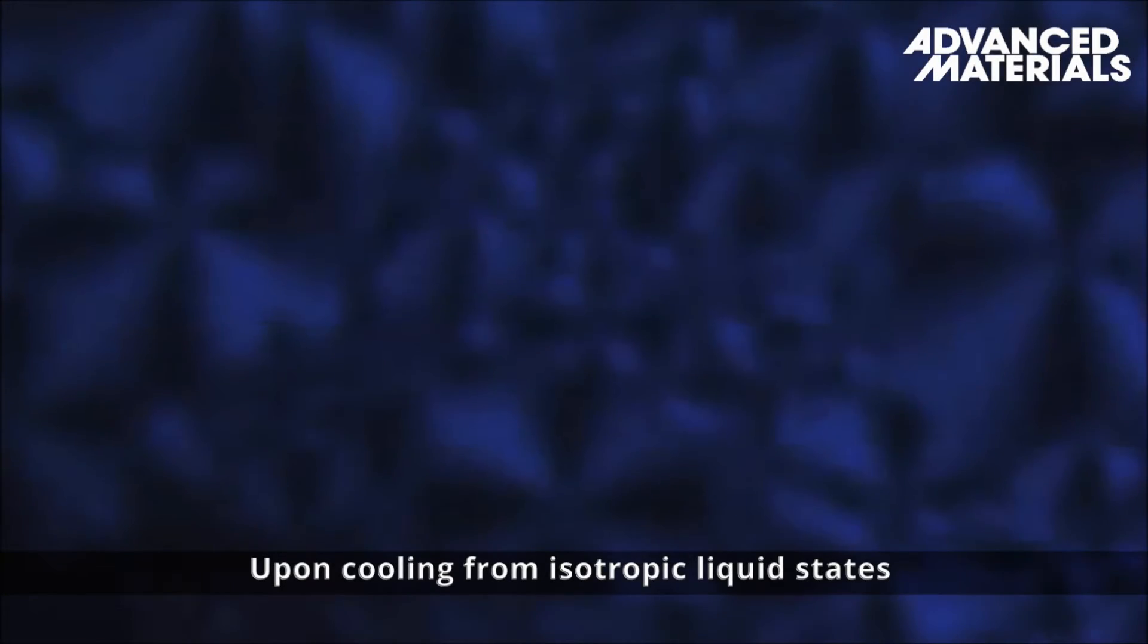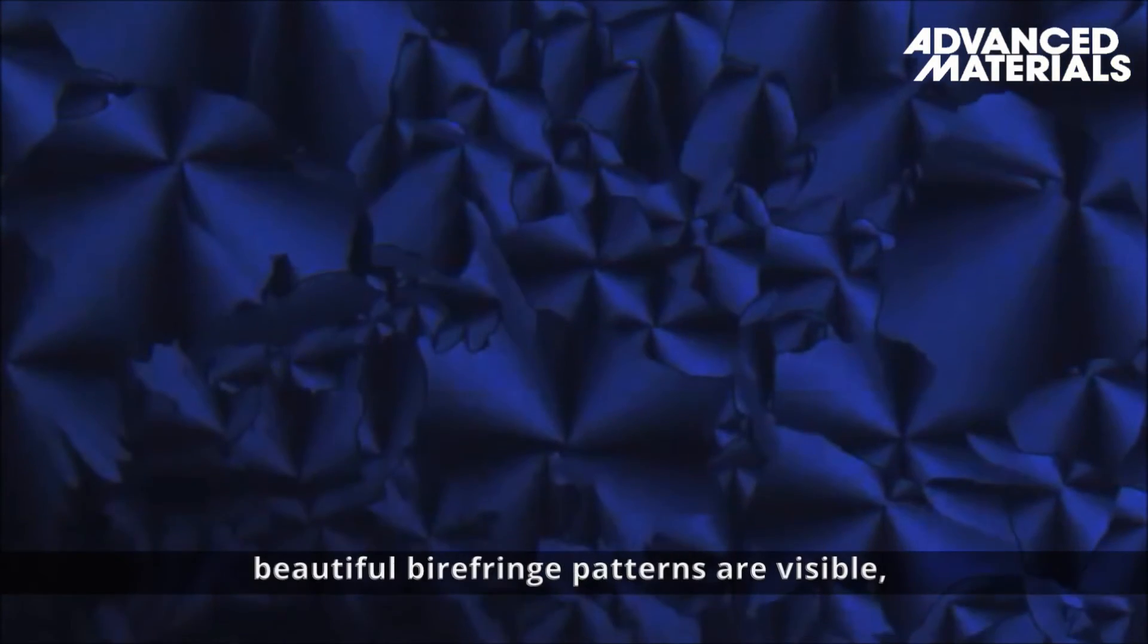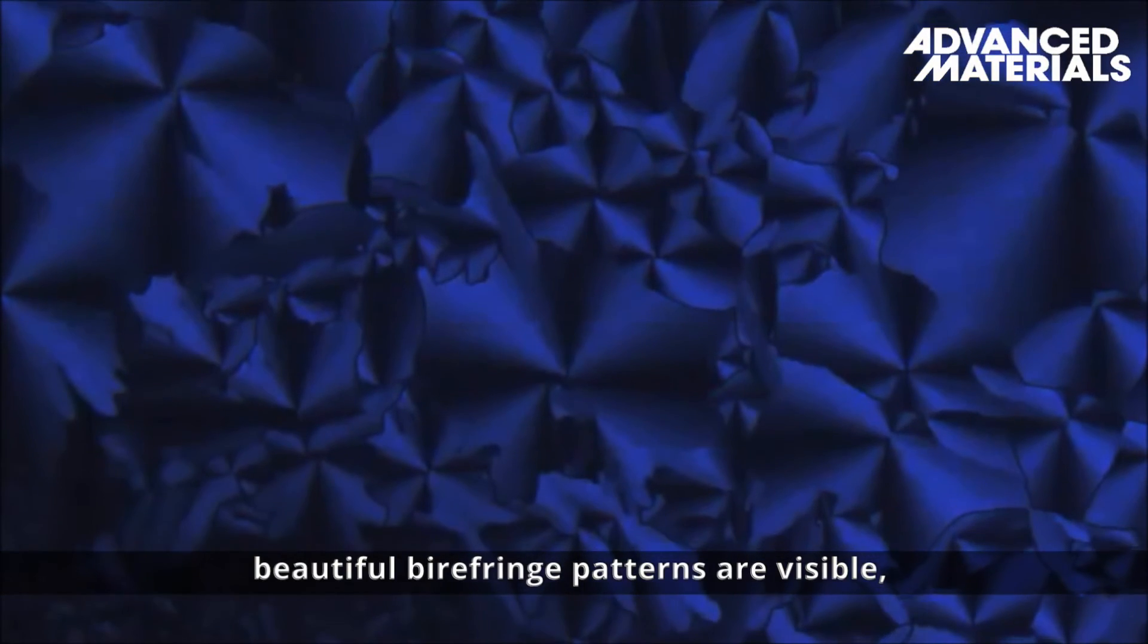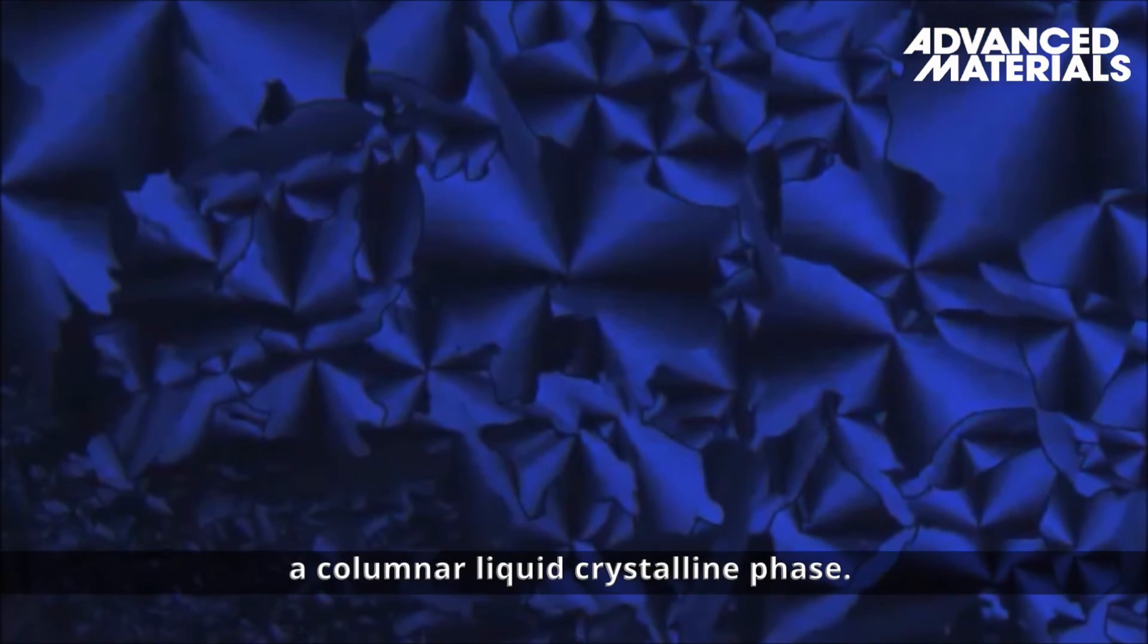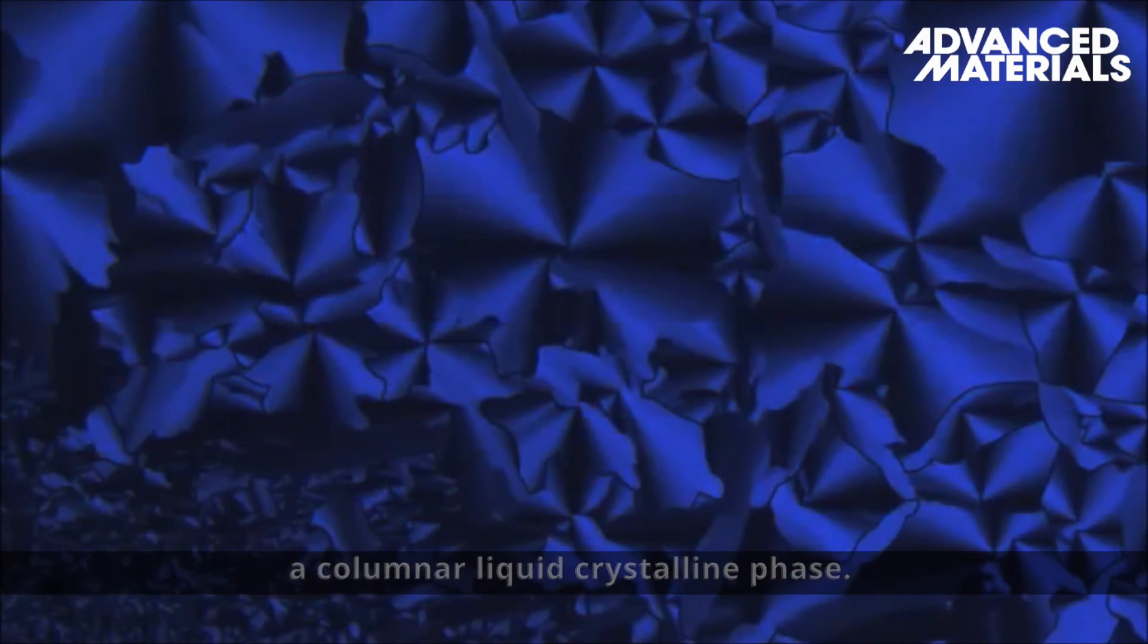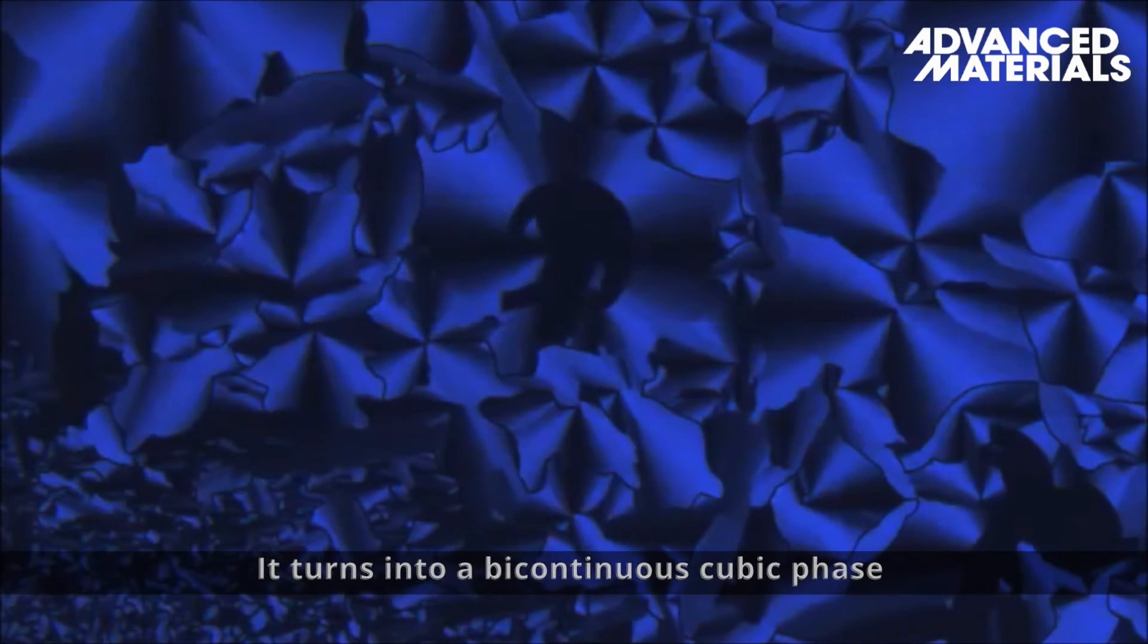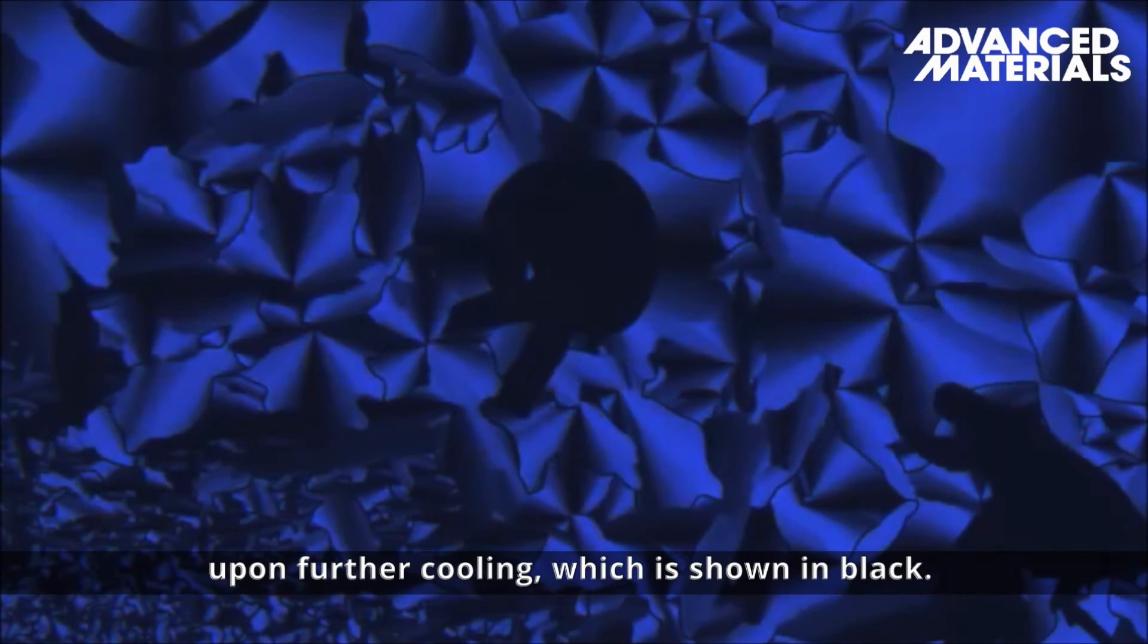Upon cooling from isotropic liquid states, beautiful birefringence patterns are visible, which indicate the formation of a columnar liquid crystalline phase. It turns into a bicontinuous cubic phase upon further cooling, which is shown in black.